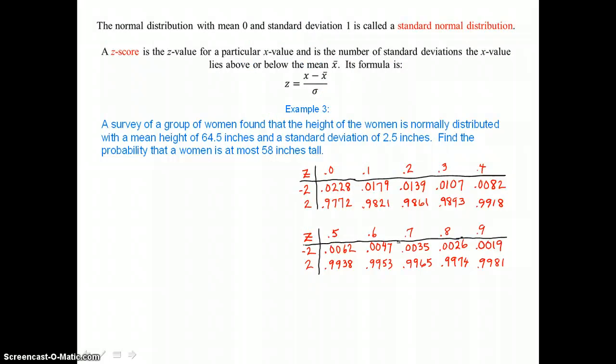The normal distribution with mean 0 and standard deviation 1 is called the standard normal distribution. A z-score is the z-value for a particular x-value, and is the number of standard deviations the x-value lies above or below the mean x-bar. Its formula is z equals x minus the mean x-bar, divided by sigma, the standard deviation.